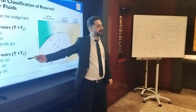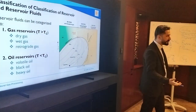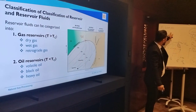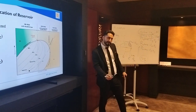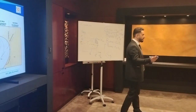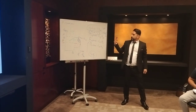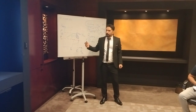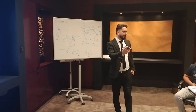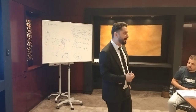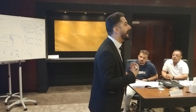So we have three main types of gas reservoirs. If the temperature is lower than the critical temperature, we are going to have liquid or liquid plus gas — meaning an oil reservoir. According to the pressure of the reservoir, we can have volatile oil, black oil, or heavy oil, and the difference between these types is the amount of gas.